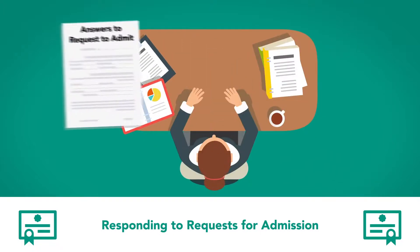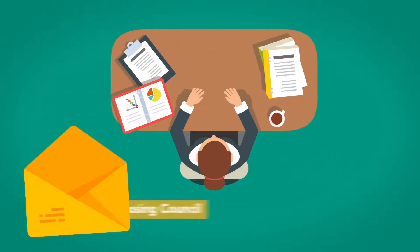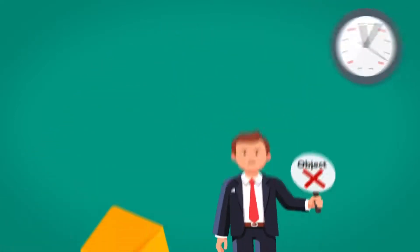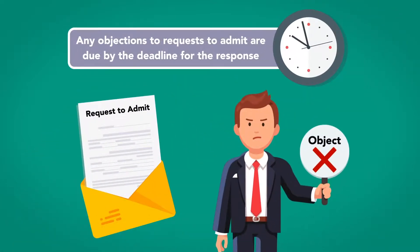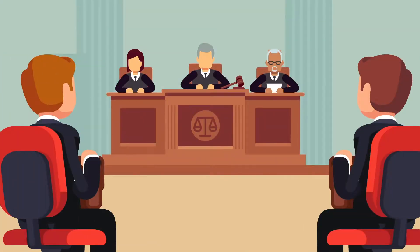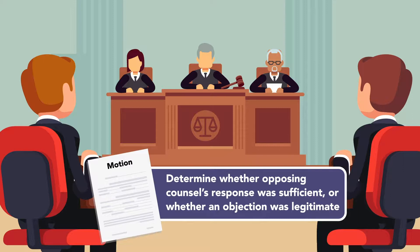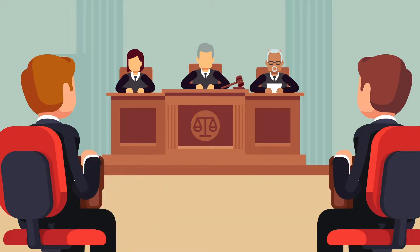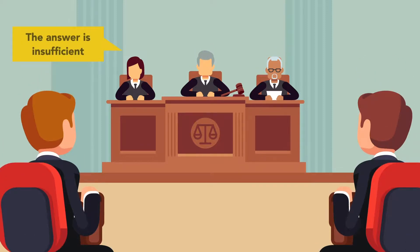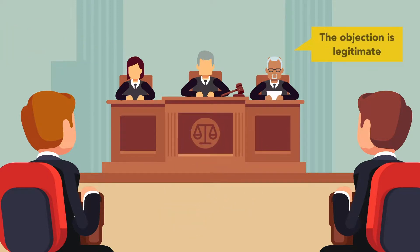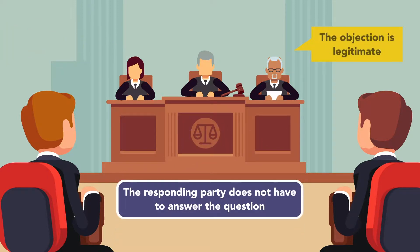Written answers to requests to admit must be signed and served upon opposing counsel, but they need not be given under oath. Any objections to requests to admit are due by the deadline for the response. The party who served the requests can file a motion asking the court to determine whether opposing counsel's response was sufficient or whether an objection was legitimate. If the court finds that an answer is insufficient, the judge has the option to deem the factual statement admitted or allow an amended answer.